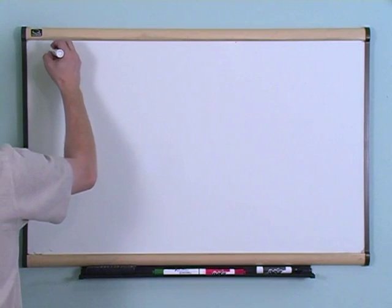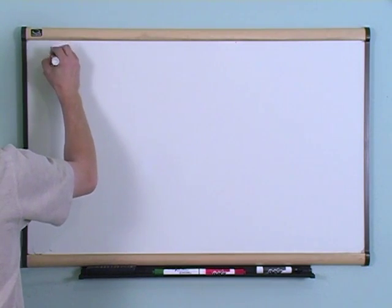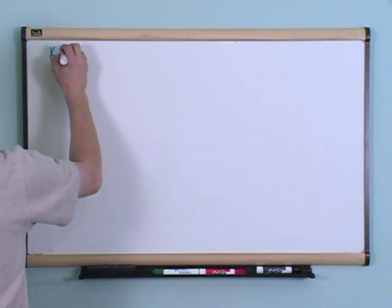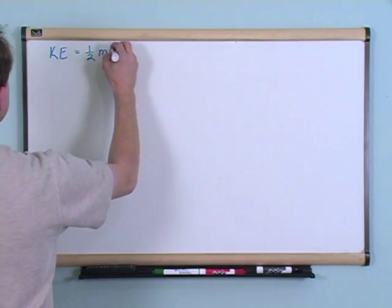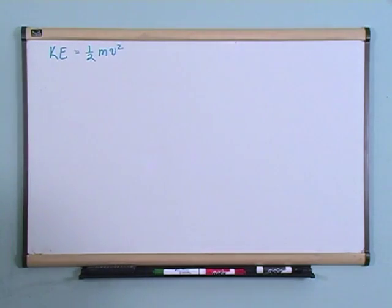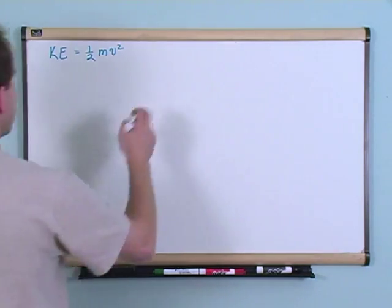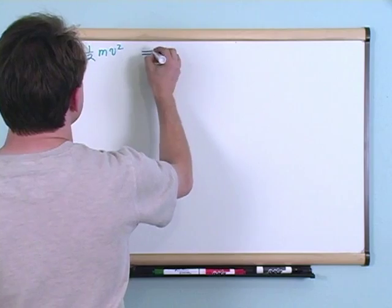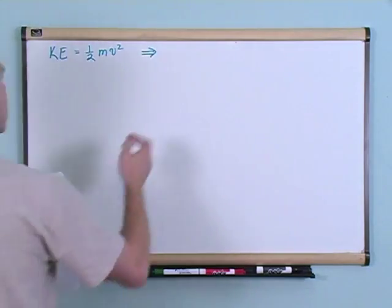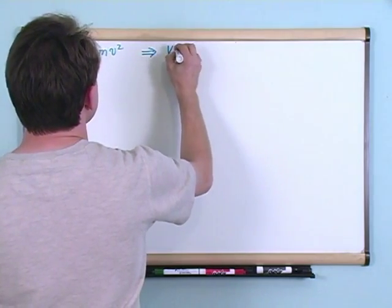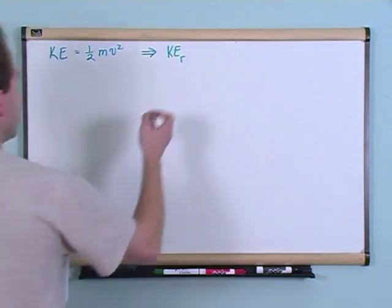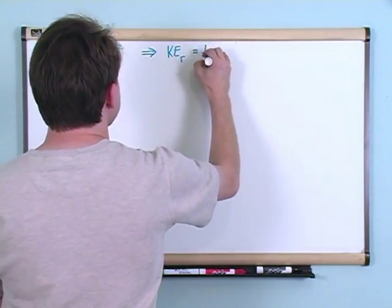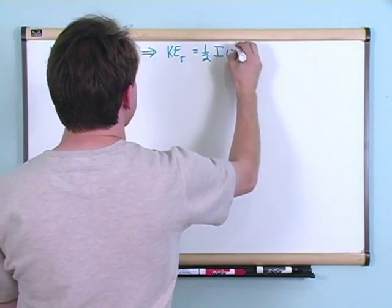Recall that for linear momentum, the kinetic energy was simply equal to one-half times m times v squared. In the new rotational system, the kinetic energy of rotation — I'm going to denote that with an r — is going to be one-half times I times omega squared.